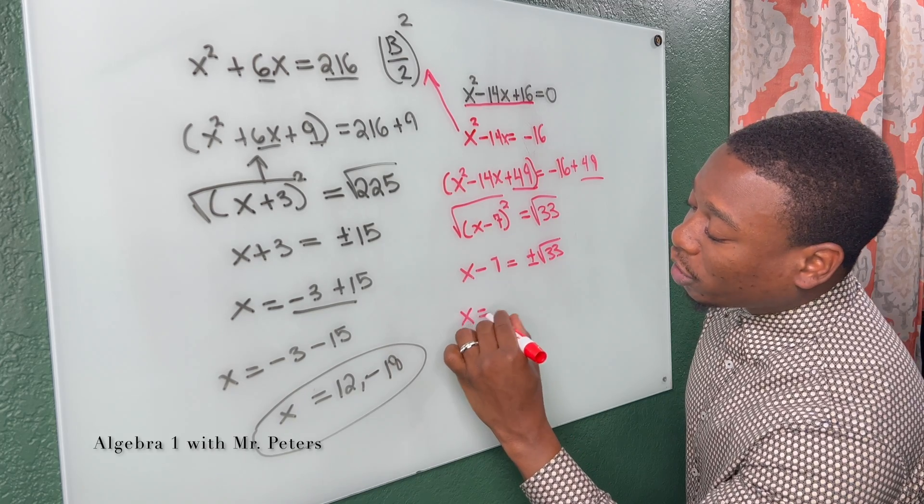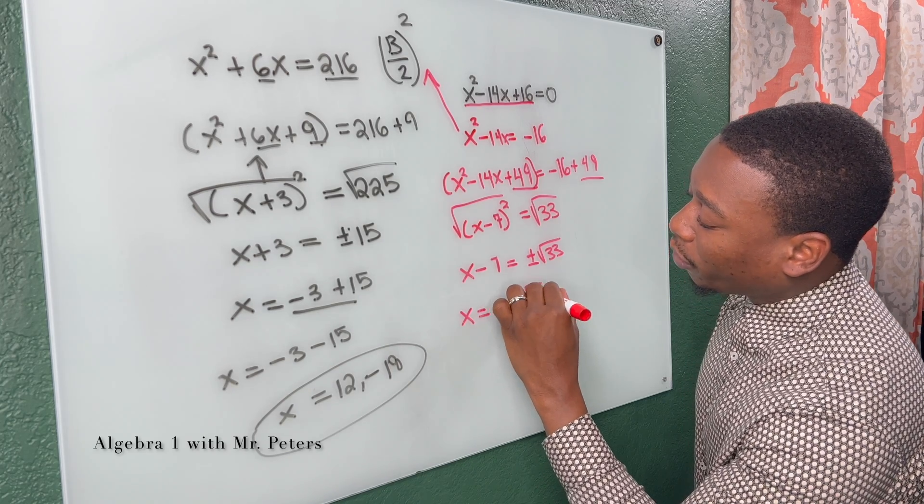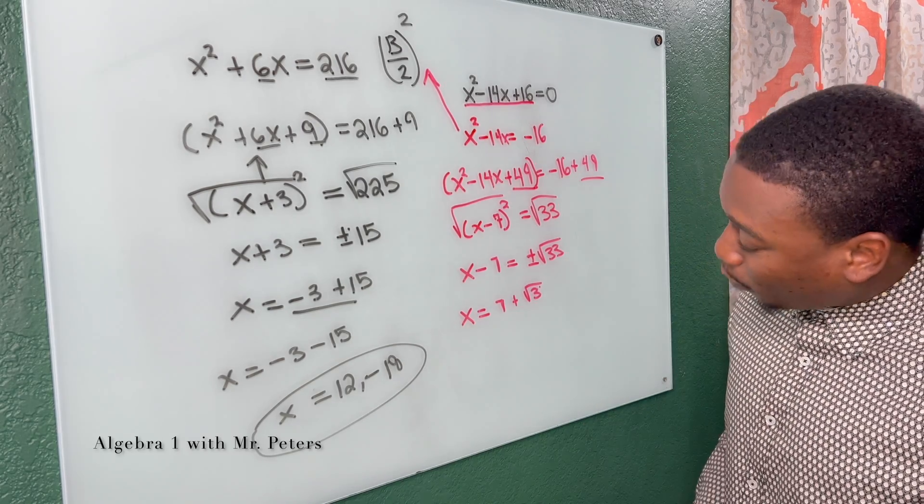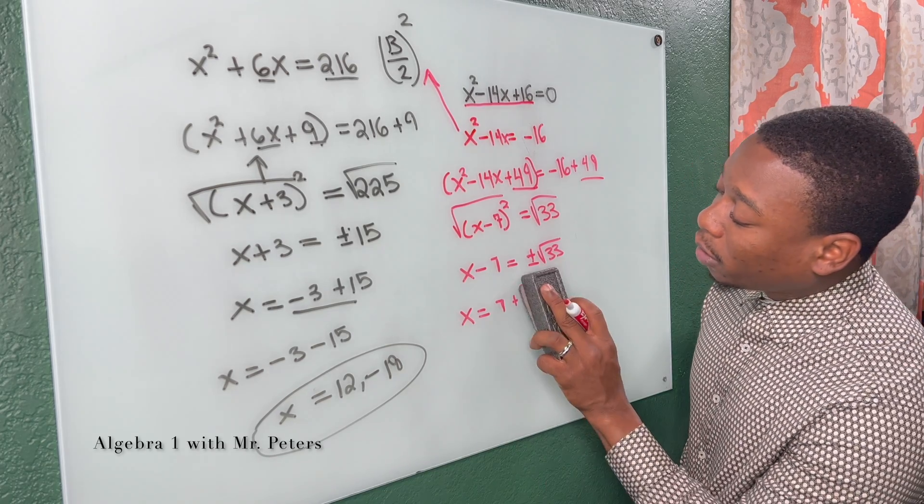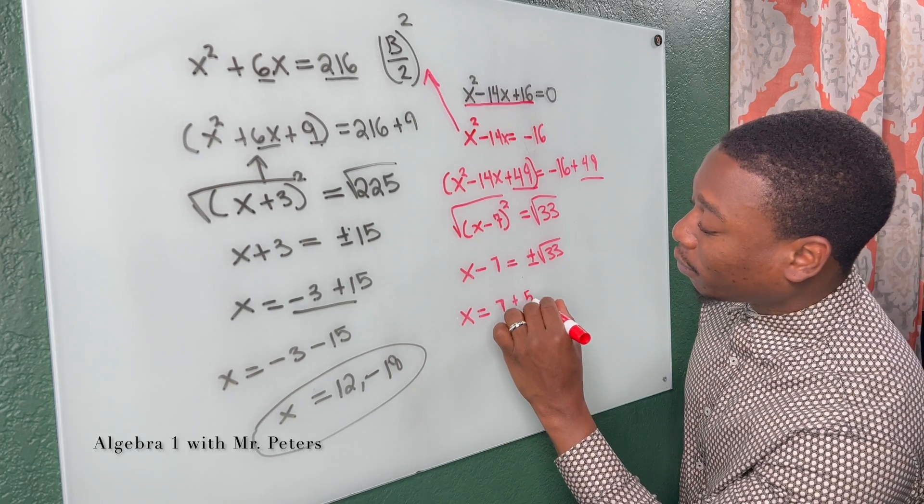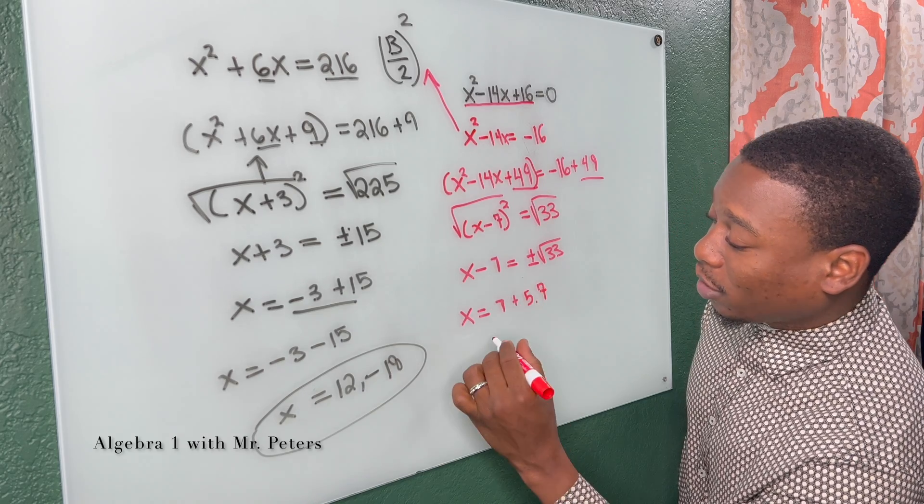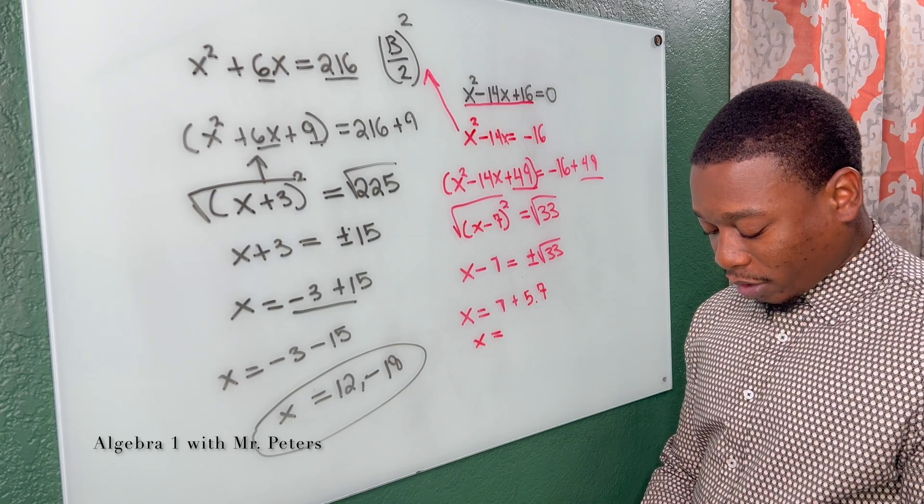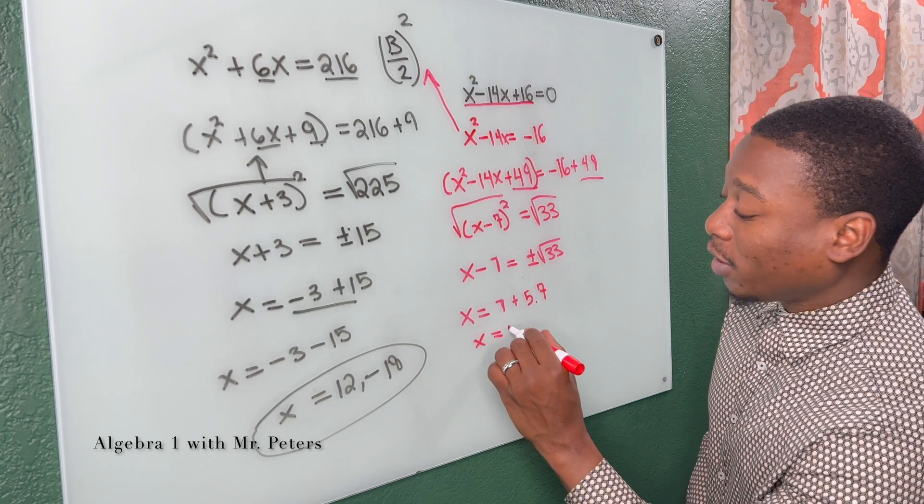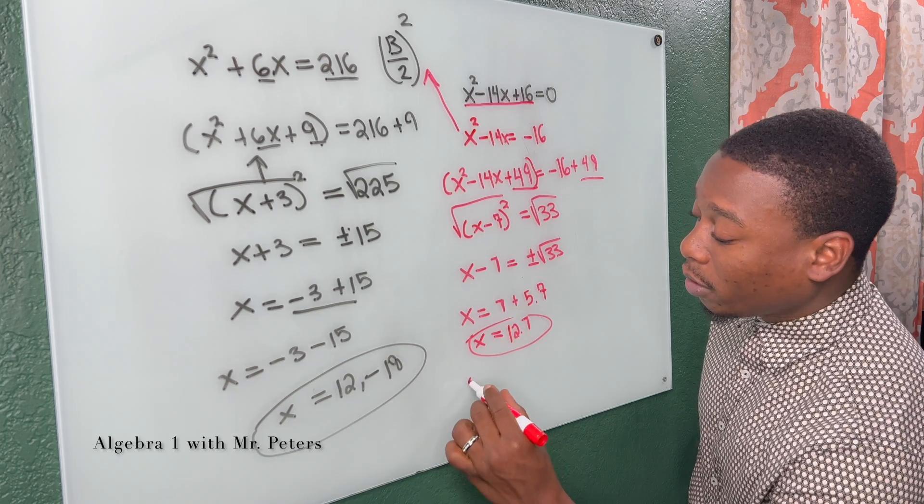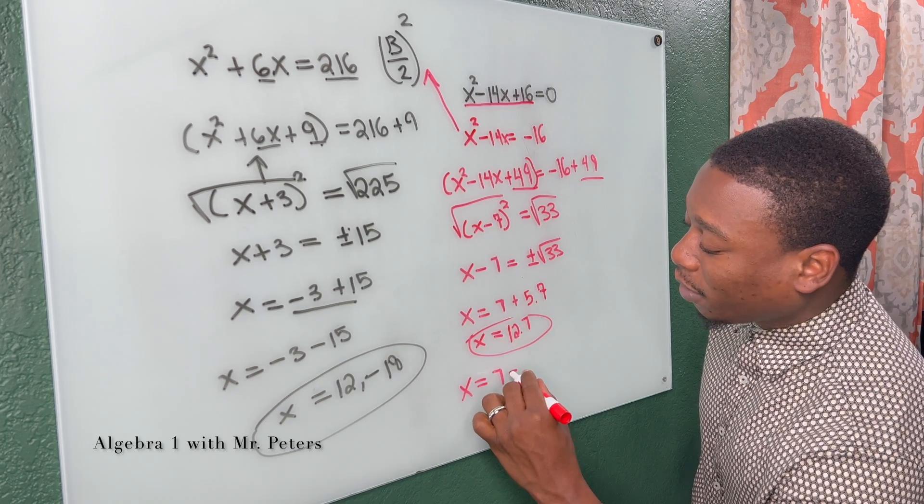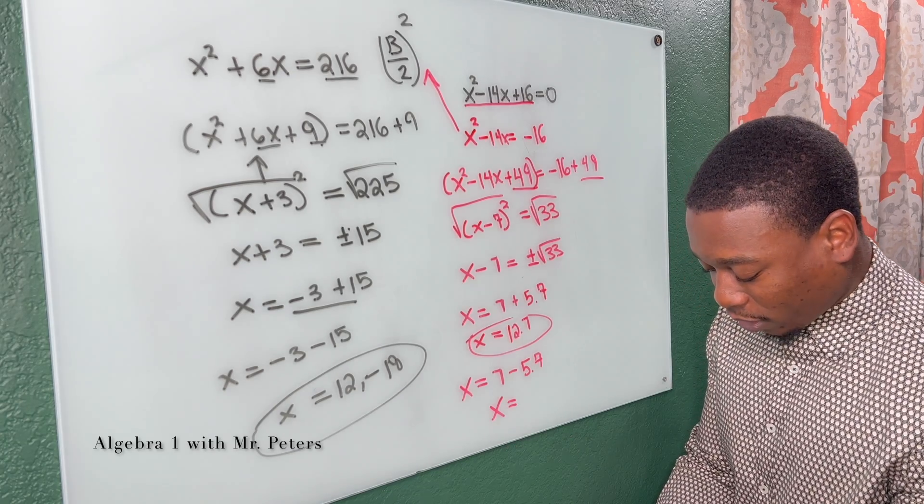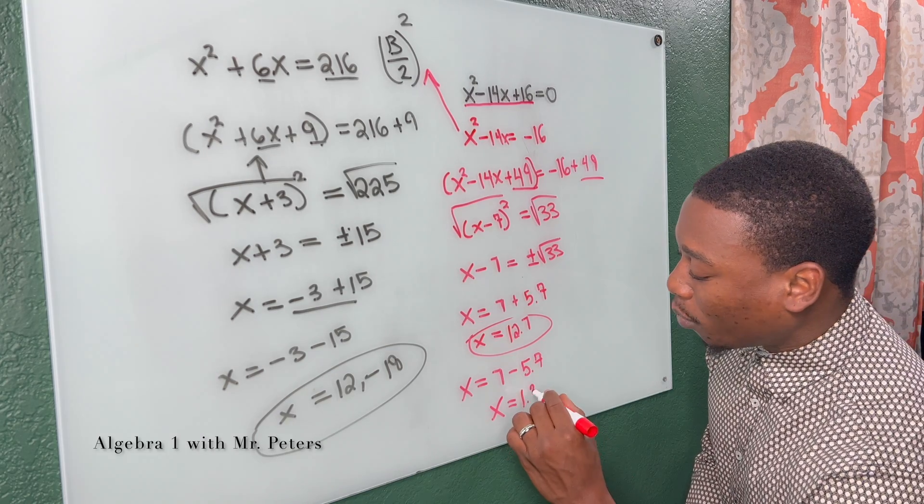So now we create our equations, x is equal to plus the square root of 33. And matter of fact, let's just get what the decimal version. So it's 5.74. Let's just round this off to 5.7. So now x is equal to, I want to say that's 12.7. Let's double check. Yeah, x is equal to 12.7. That's the first answer. And x is equal to 7 minus 5.7. I want to say that's 1.3, but let's just make sure. Yep, x is equal to 1.3.